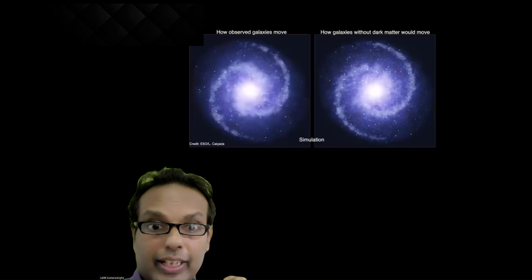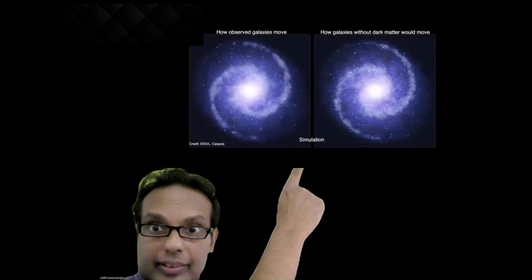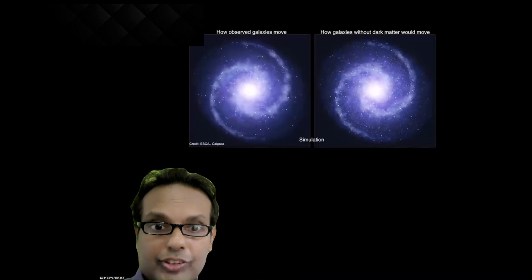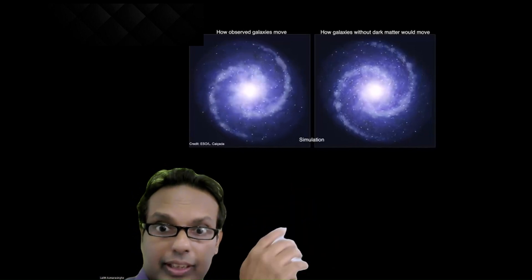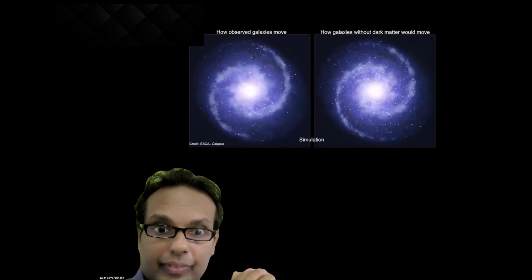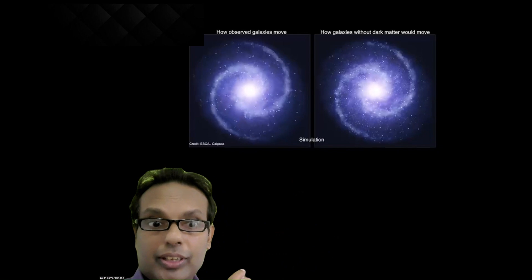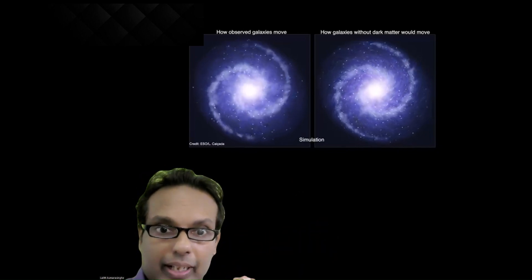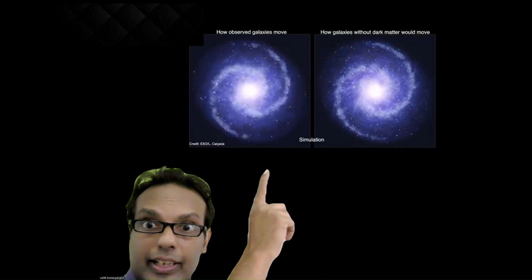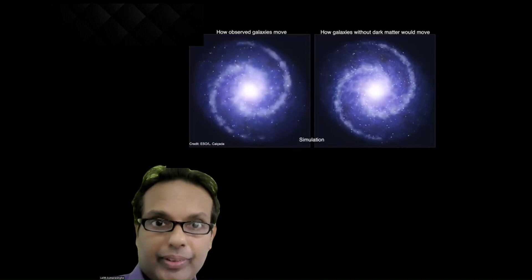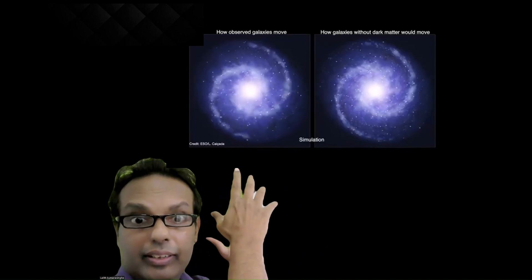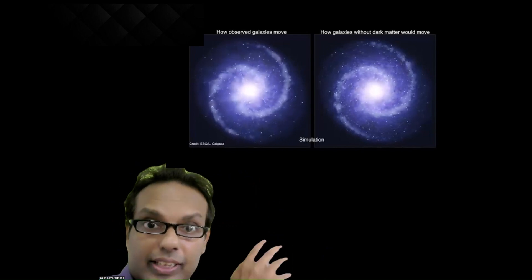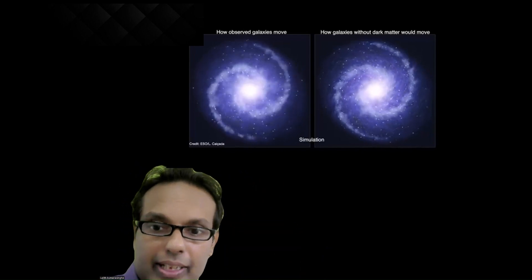This is evidence for the existence of dark matter. We were expecting that, like in our solar system, when you go further away, things should slow down. If there is only a central mass, things should slow down. But there is invisible matter in a galaxy, and that's why these things are speeding up.